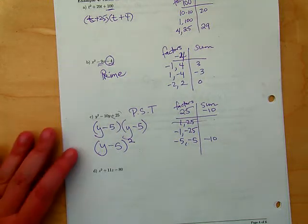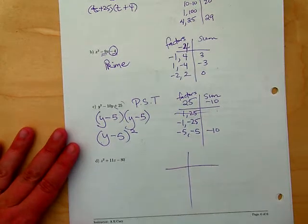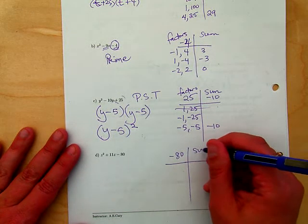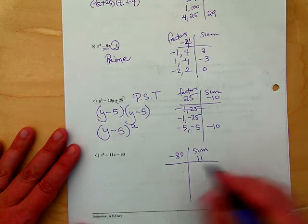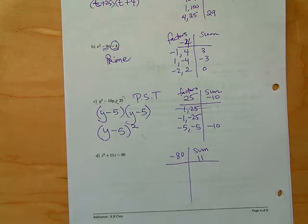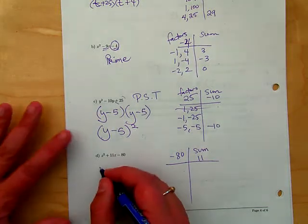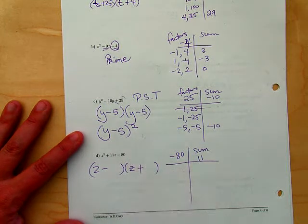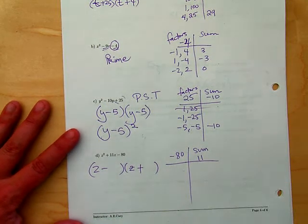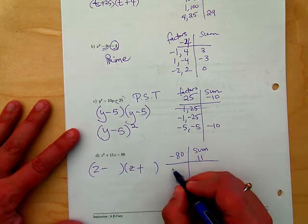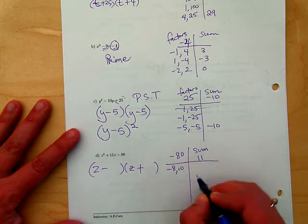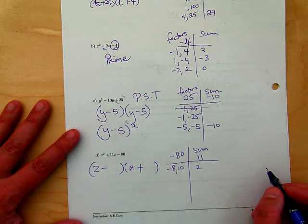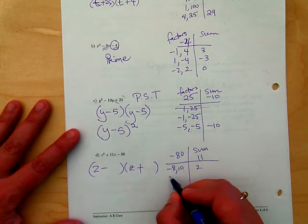What about this one? Factors of negative 80 that have a sum of 11. Right away it's a negative, so what does that tell me? They're opposite signs to get a negative. I try to think of the first ones I can: 8 times 10, nope that adds to 2. What else goes into 80? 16 and 5.